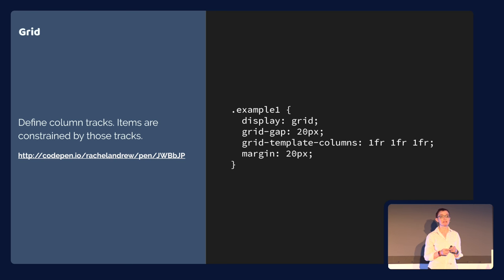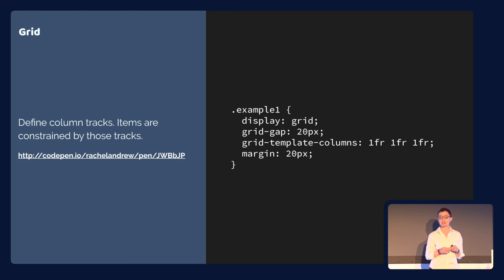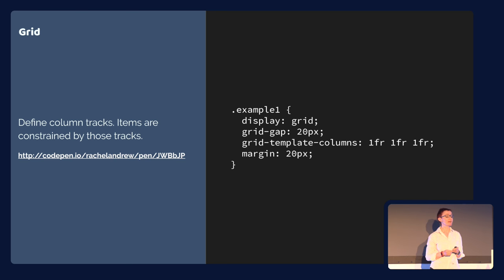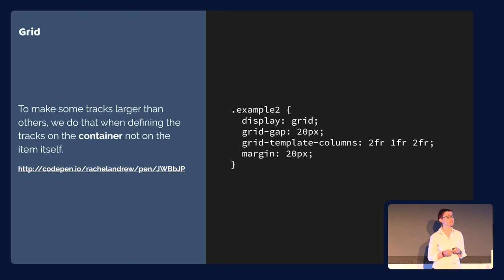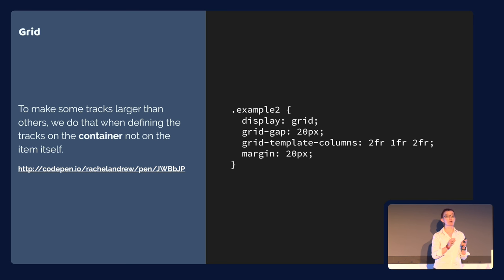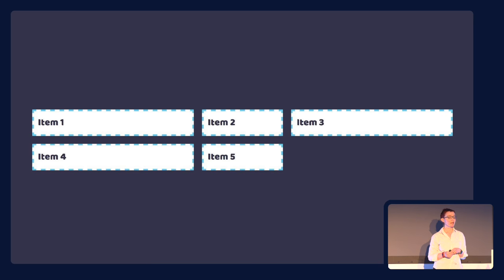The fr unit represents a portion of the space in the grid container — a fraction of the available space. Here we've got three tracks all set to 1fr, so we divide the space into three equal parts. We can also ask some tracks to take up more space proportionally — with two tracks at 2fr, the available space divides into five parts: two, one, and two. Space distribution happens on the container, not on individual rows.